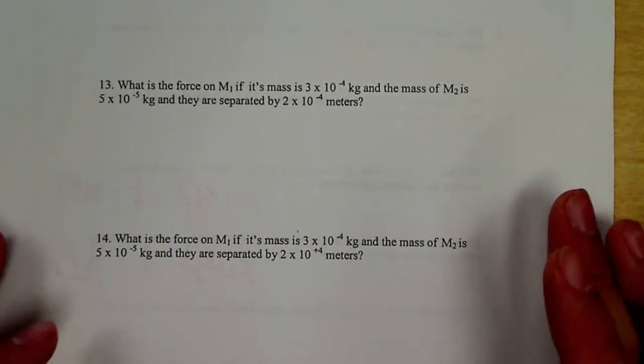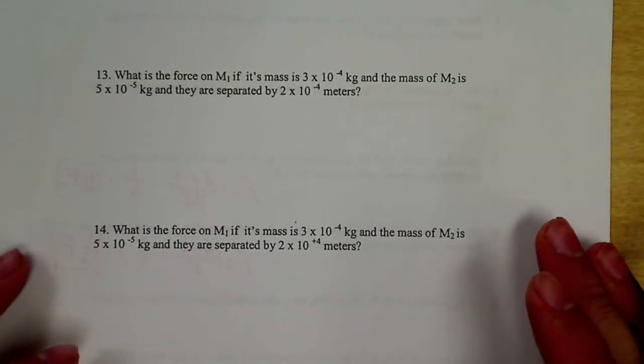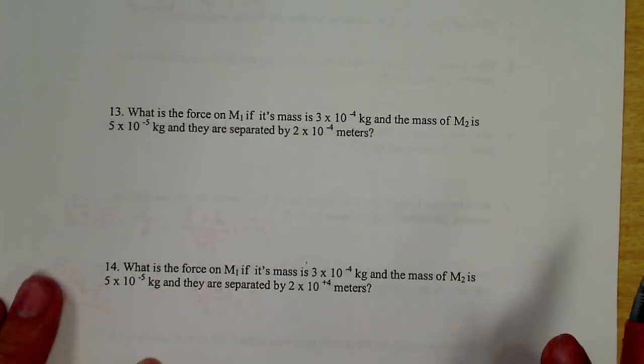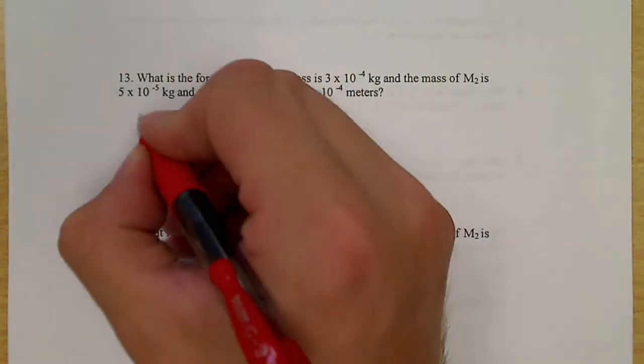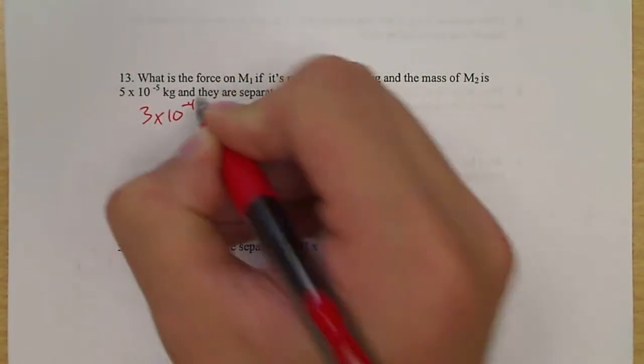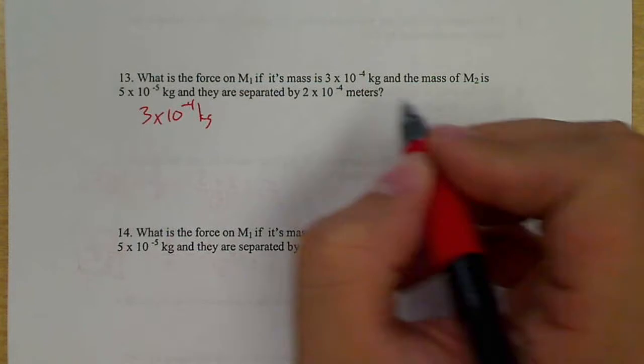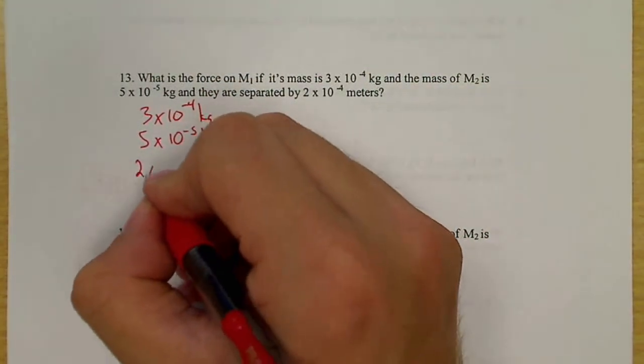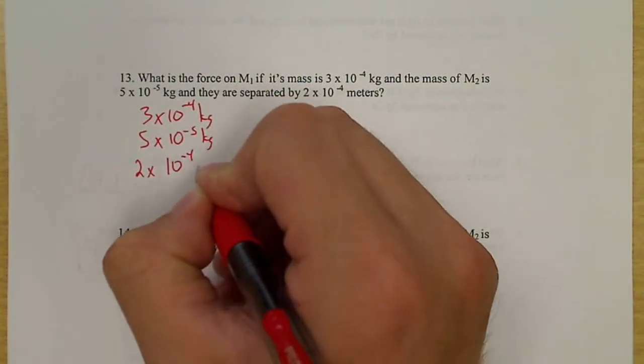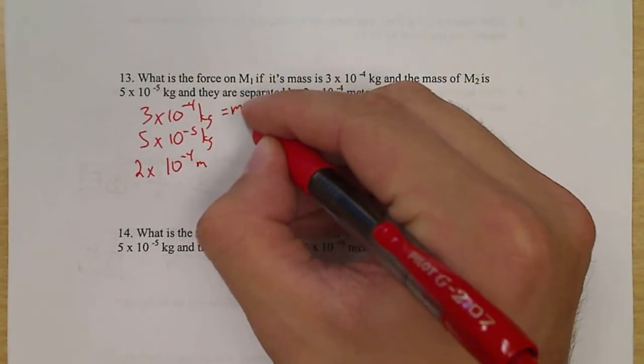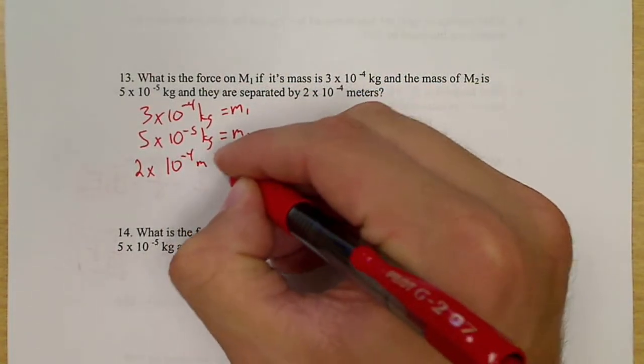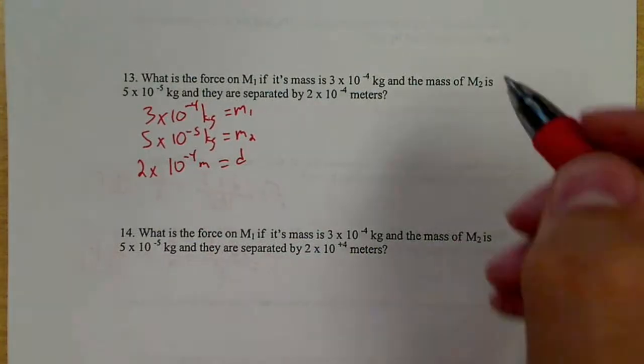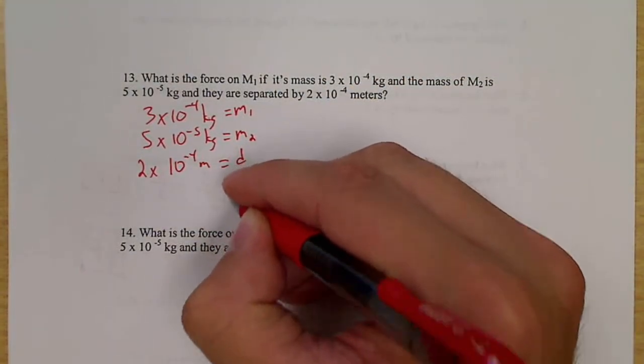Let's do one more. Let's look at number 13. So what is the force on M1 if its mass is 3 times 10 to the negative 4th kilograms, and the mass of M2 is 5 times 10 to the negative 5th kilograms, and they are separated by 2 times 10 to the negative 4th meters? So that's my M1, M2, distance. I know this from the units. The kilograms are the masses, the meters is the distance. I'm still looking for the force of gravity here.